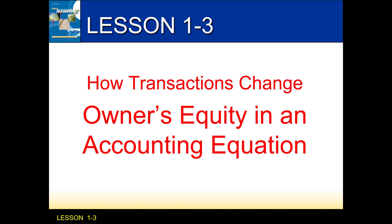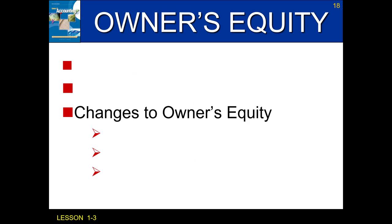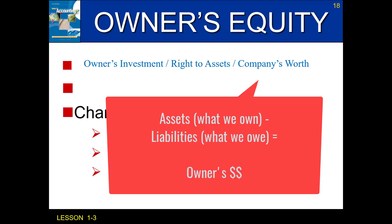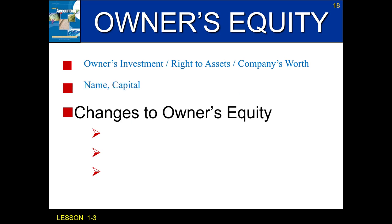Now that we understand how different transactions can change the accounting equation, we need to go a little bit more in depth into specifically the owner's equity transactions. Owner's equity was the owner's investment or their right to the assets — in short, the company's worth. When we took all of the assets, everything that they owned, and subtracted their liabilities, anything left over if they decided to sell their company or retire, that would be their owner's equity. We had called this account title 'name of the owner, comma, capital.'